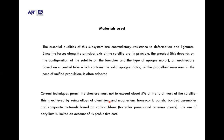The essential material qualities are contradictory: resistance to deformation and lightness. An architecture based on a central tube containing the solid apogee motor or propellant reservoirs is often adopted. Current techniques permit the structure mass not to exceed about 5% of the total satellite mass, achieved by using aluminium-magnesium alloys, honeycomb panels, bonded assemblies, and composite materials based on carbon fibres. The use of beryllium is limited due to its prohibitive cost.